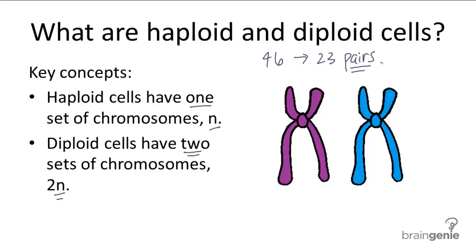Each set has 23 chromosomes, so together it makes 23 pairs of chromosomes. One set comes from the mother, one set comes from the father, and a pair of chromosomes will include one chromosome from the mother and the father.